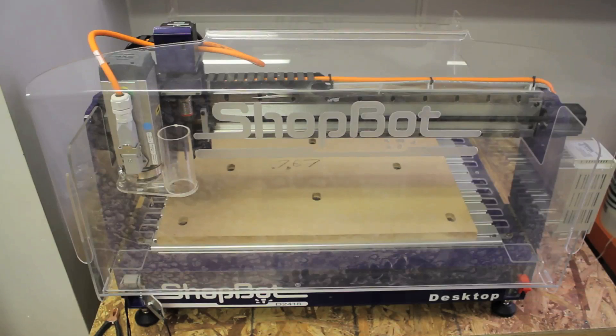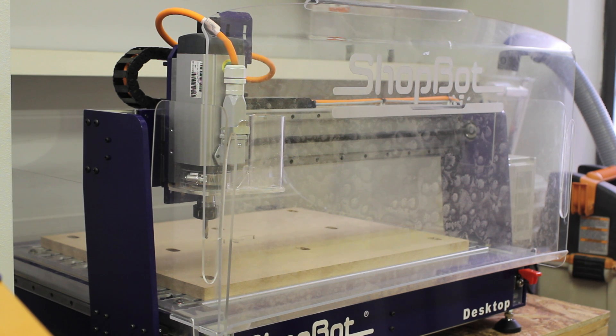ShopBot offers an optional plastic enclosure for their desktop model. This is great for helping to contain the dust and chips that you're going to create, and it's a must-have if you're, say, a shop teacher running this in a school environment.